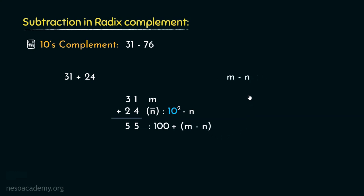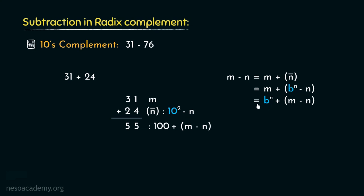Earlier, we saw that when subtracting two n-digit numbers following the radix complement procedure, we end up getting b raised to the power n plus m minus n. Using n bits, we can at most represent the value b raised to the power n minus 1. Even if m minus n results in 0, we will still obtain b raised to the power n, which cannot be accommodated using n digits — meaning even a result of 0 still produces a carry. Here we didn't obtain any carry, so clearly the result m minus n is a negative value. When we don't obtain any carry, the obtained result is in radix complement form.